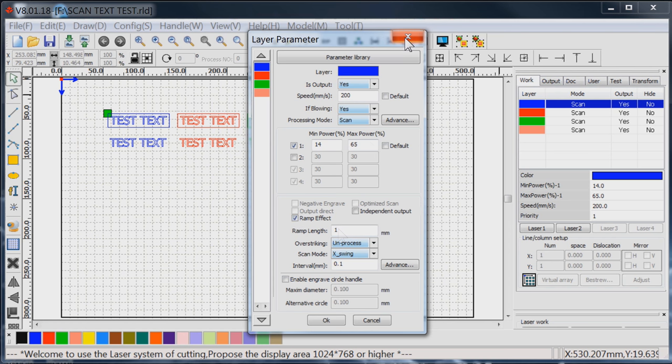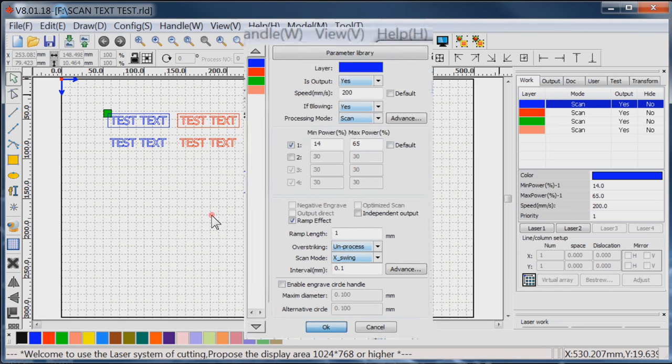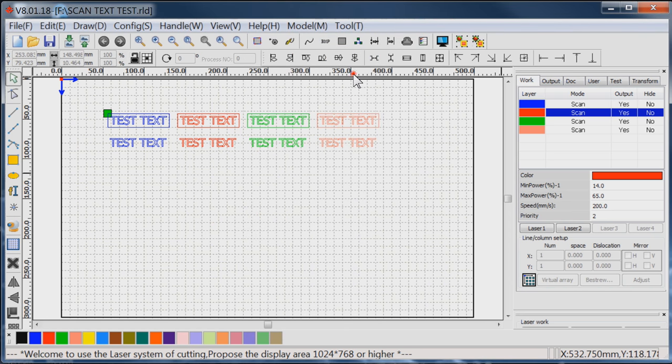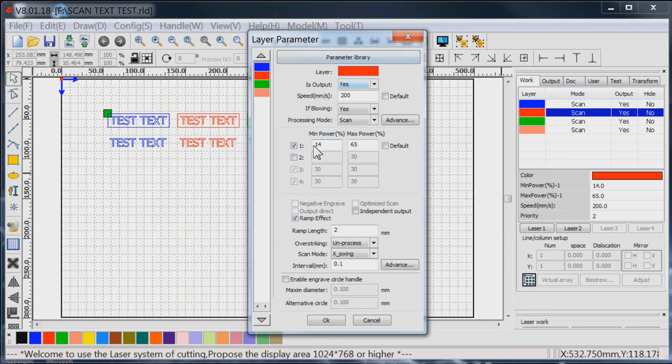We'll do the same thing for the red layer. I've already set the red layer up to 14 and 65 and 200 millimeters a second, and I've set the ramp effect, but this time I've set the ramp length to two. Two is going to be really unrealistic.